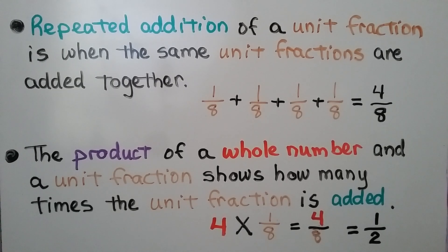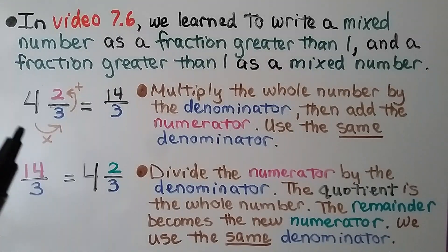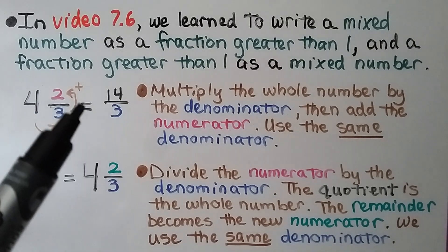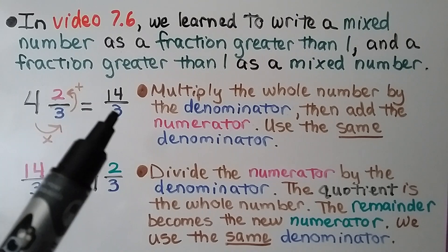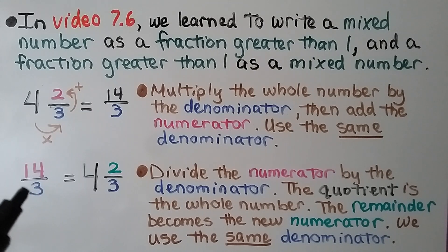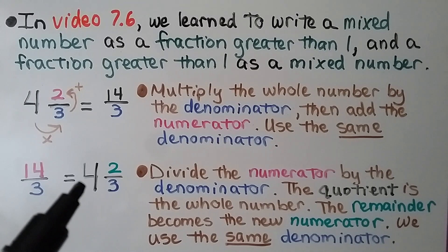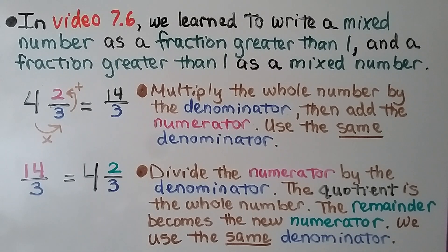We've learned about that in 6.3. In video 7.6, we learned to write a mixed number as a fraction greater than 1, and a fraction greater than 1 as a mixed number. Here we have a mixed number, 4 and 2/3. We can multiply the whole number by the denominator — 4 times 3 — then add the numerator, the 2. 4 times 3 is 12, plus 2 more is 14. That is our new numerator, and we use the same denominator. If we have a fraction greater than 1, we can divide the numerator 14 by the denominator 3. 14 divided by 3 is 4. The quotient is the whole number; the remainder, because 4 times 3 is 12, that remainder 2 becomes the new numerator and we use the same denominator. If that really confused you, watch video 7.6 that's linked in the description.